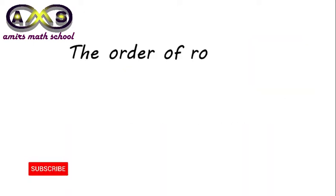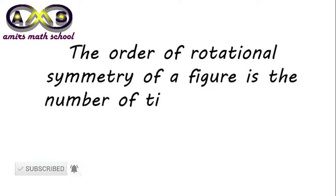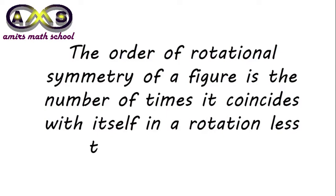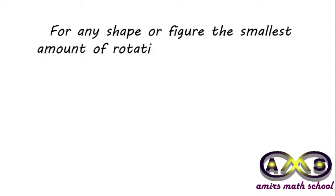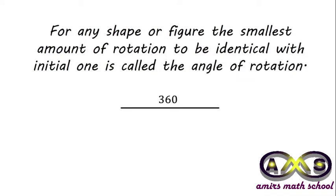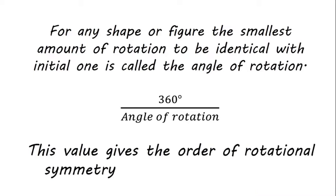The order of rotational symmetry of a figure is the number of times it coincides with itself in a rotation less than 360 degrees. For any shape or figure, the smallest amount of rotation needed to be identical with the initial one is called the angle of rotation. And 360 degrees divided by the angle of rotation always gives the value of the order of rotational symmetry for the shape or figure.